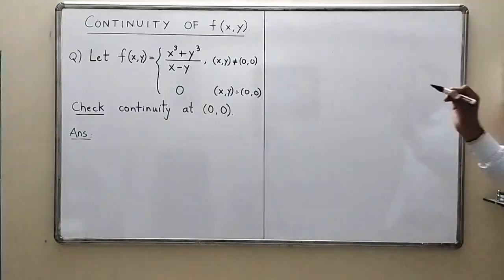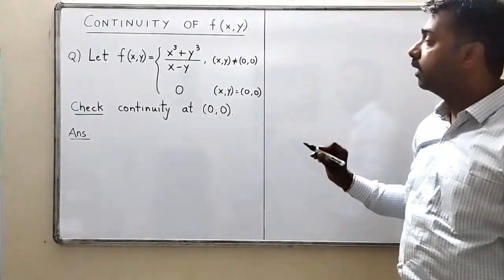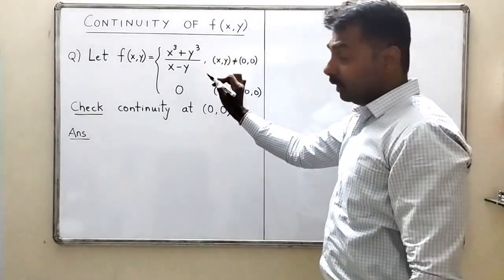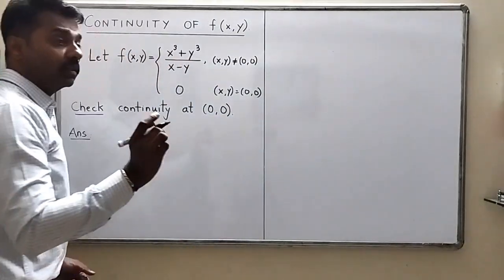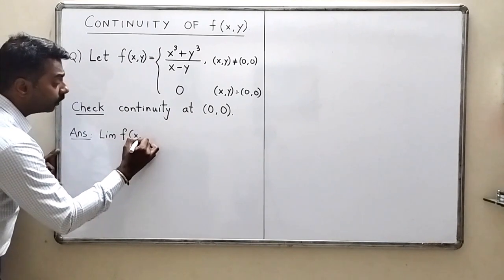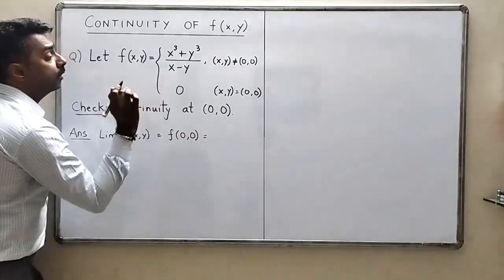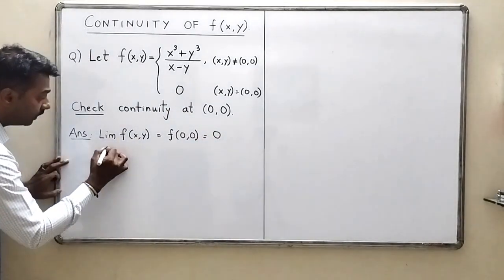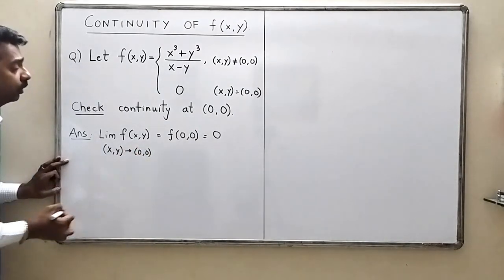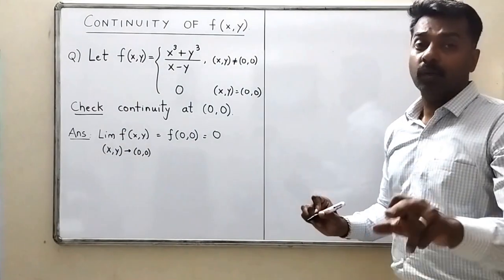The second problem is f(x,y) equal to x³ plus y³ upon x minus y when x and y are not equal to zero, and equal to zero when x and y are zero zero. We again have to check the continuity — that is, whether the limit of the function equals f(0,0), which is given as zero.